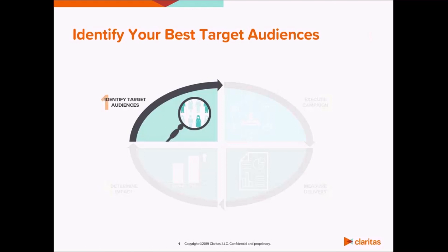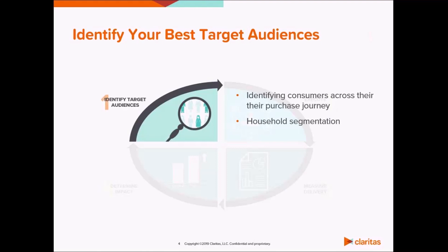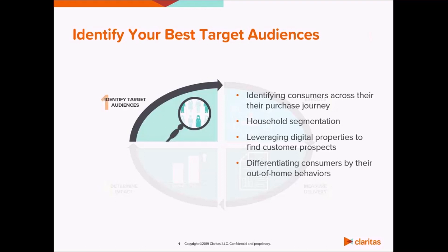In the first episode, we learned how Claritas differentiates consumers in a few ways, depending on where they fall within their purchase journey. We use household segmentation to group consumers based on core behaviors and characteristics, helping clients answer more top-of-funnel questions. Digital properties like company websites and mobile applications can identify and contextualize consumers based on how they engage with those properties. Mobile location technology can be used to identify audiences based on their out-of-home behaviors. And finally, response-based audiences can be built based on how well advertising influenced them in the past.